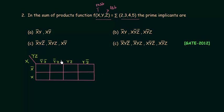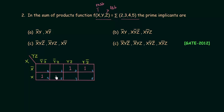Once I have the K-map, I will fill it according to the minterms given in the problem. The minterms are 2, 3, 4 and 5. I will first write down the cell numbers: M0, M1, 2, 3, 4, 5, 6 and 7. The minterms are 2, 3, 4 and 5, so we place a 1 in each of those four cells.